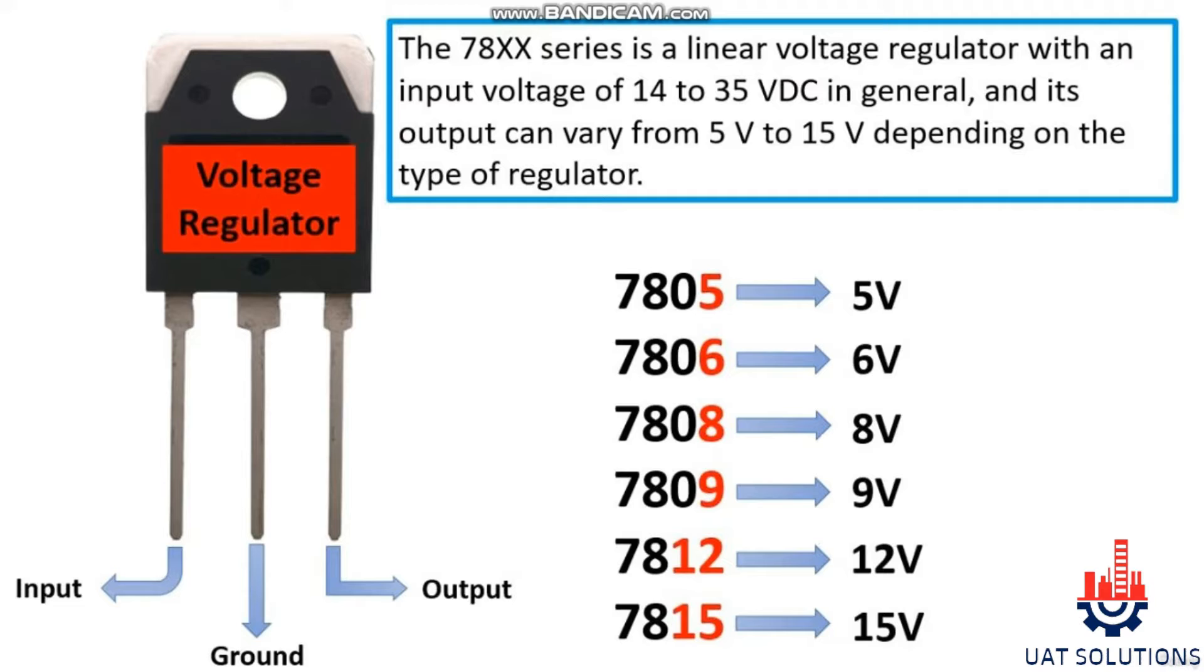The linear voltage regulator used in this video is the 7805, which has an input range from 14 volt DC to 35 volt DC with an output from 5 volt DC to 15 volt DC. The output voltage depends on the reference number of the regulator.